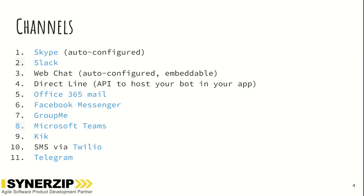The Microsoft Bot Framework supports multiple channels, with Skype being auto-configured. It also supports Slack, Office 365 Mail, Facebook Messenger, GroupMe, Microsoft Teams, Kik, Twilio, and Telegram. It also supports DirectLine APIs, which are simple REST APIs for connecting directly to a bot. These APIs are intended for developers writing their own client applications, web chat controls, mobile apps, or service-to-service applications that will talk to their bot.